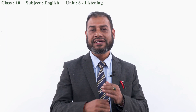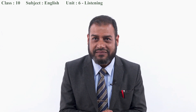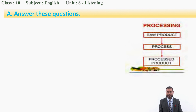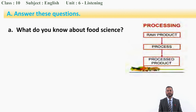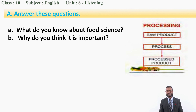Can you guess what we are going to learn in today's class? I'm going to show you a picture and ask some questions. Look here — you can see a diagram: processing raw product, process, processed product. My first question is: what do you know about food science based on this diagram?